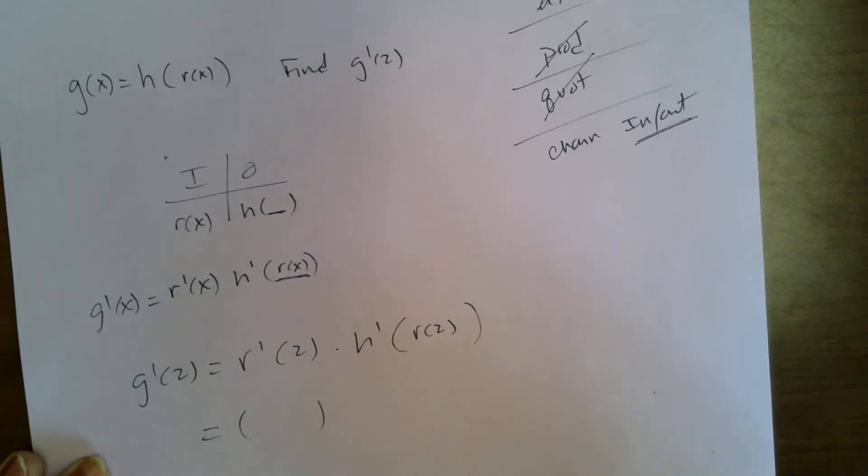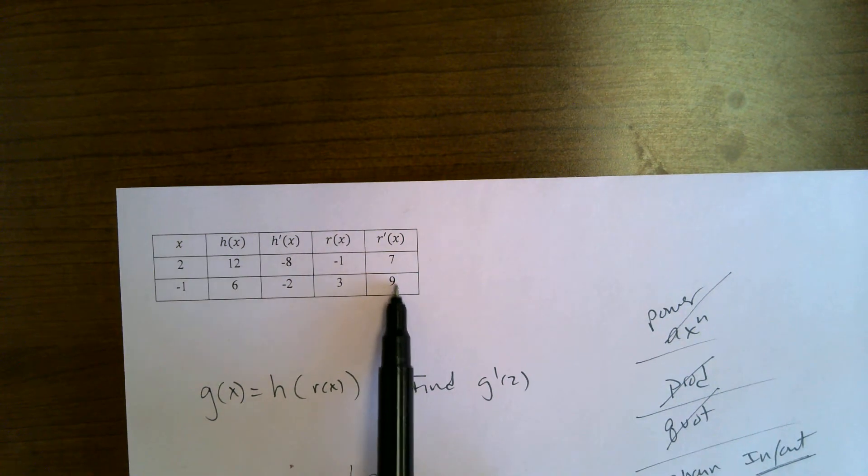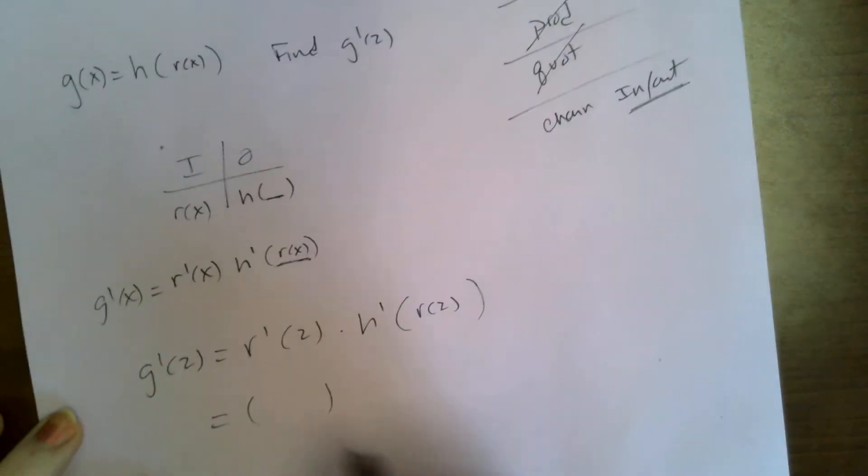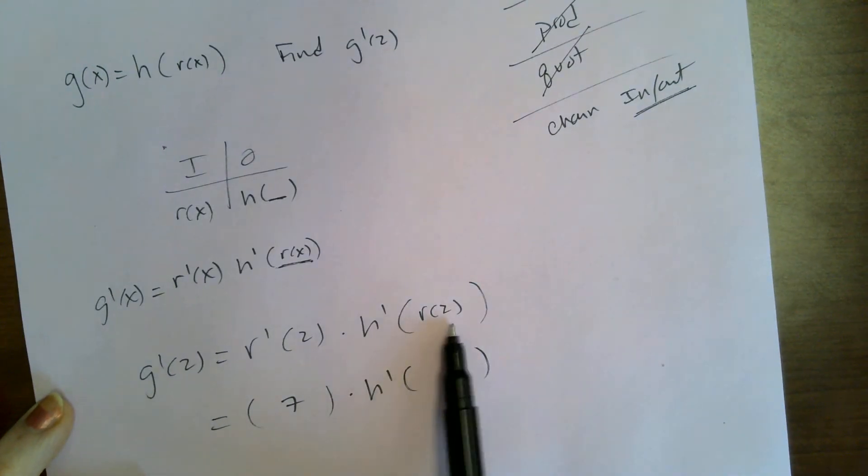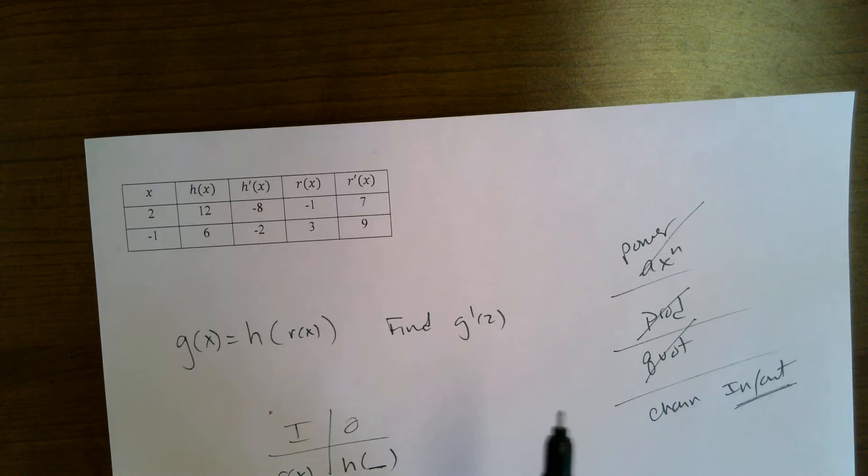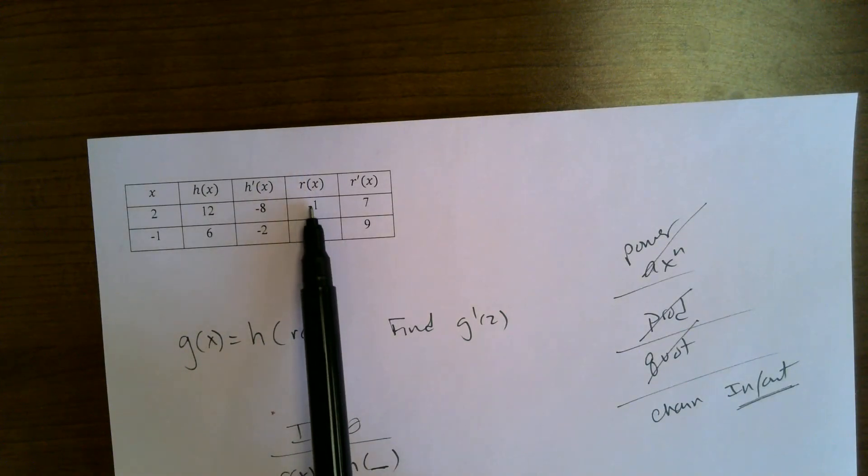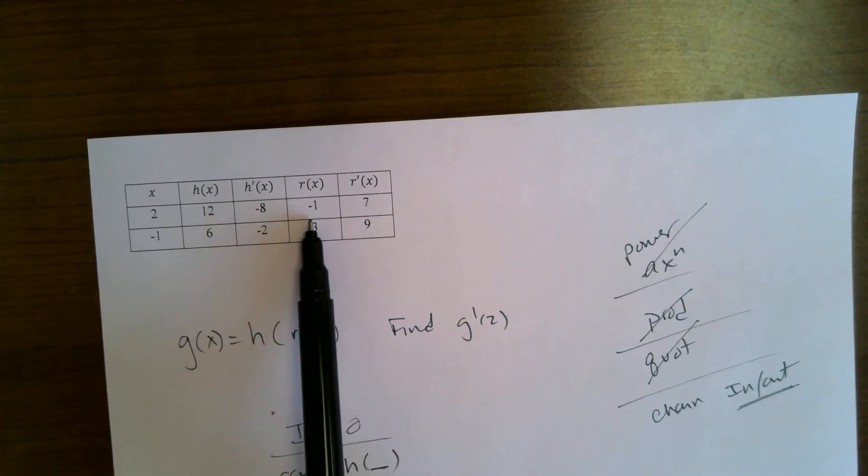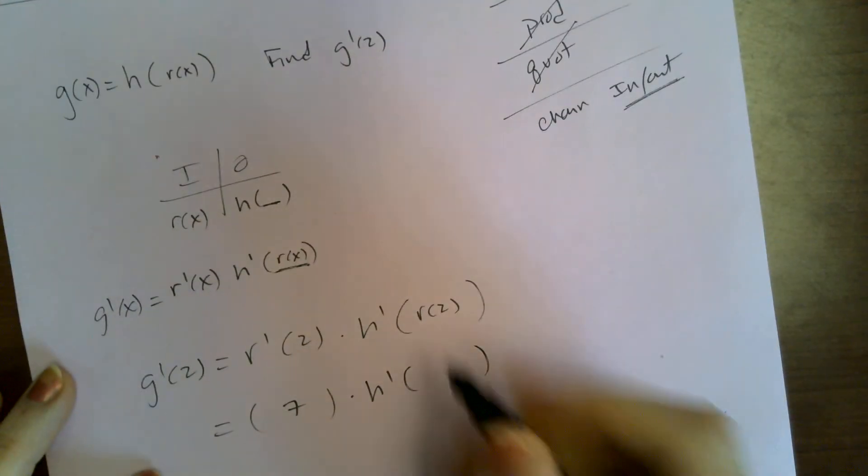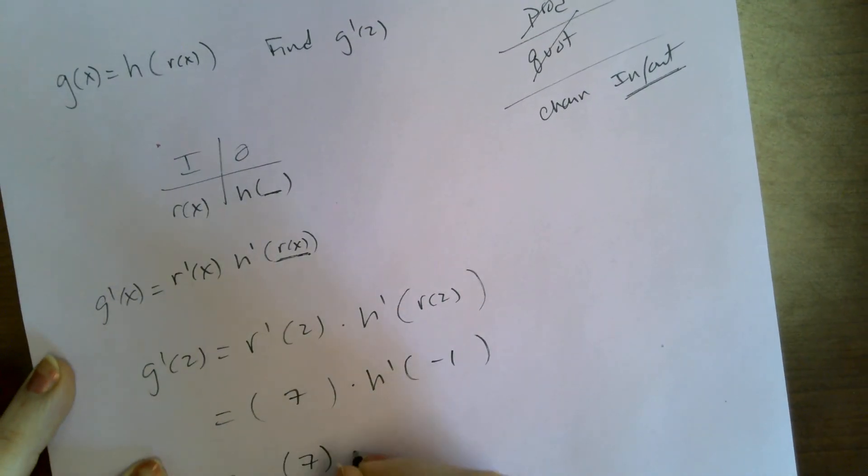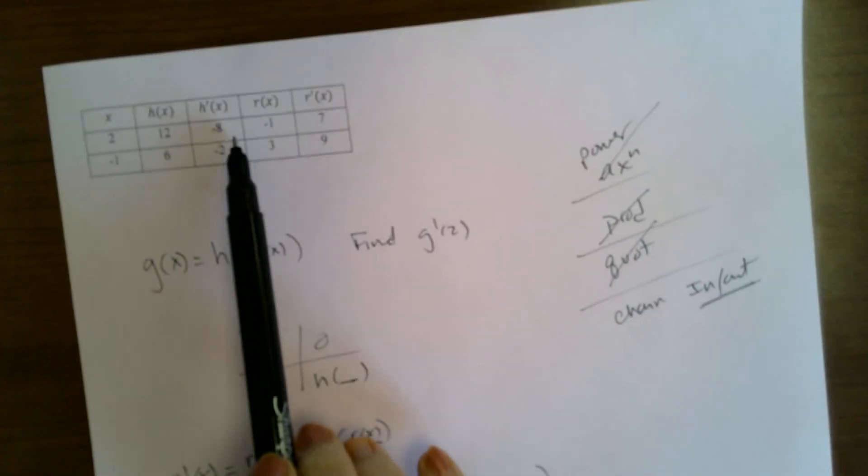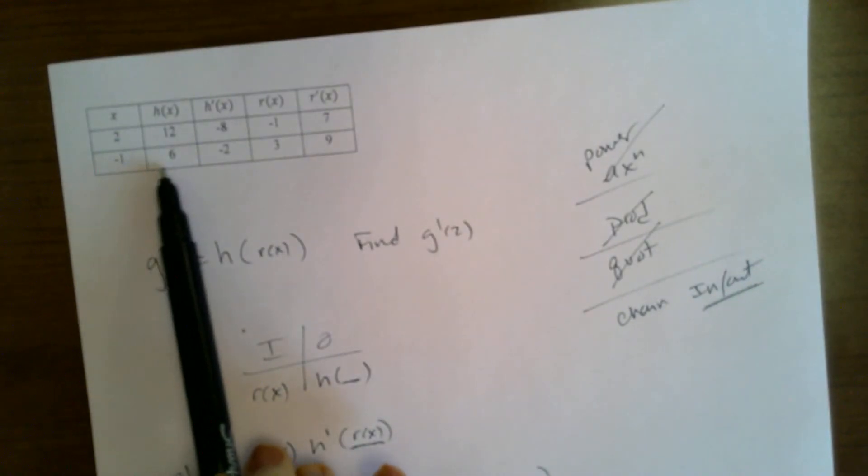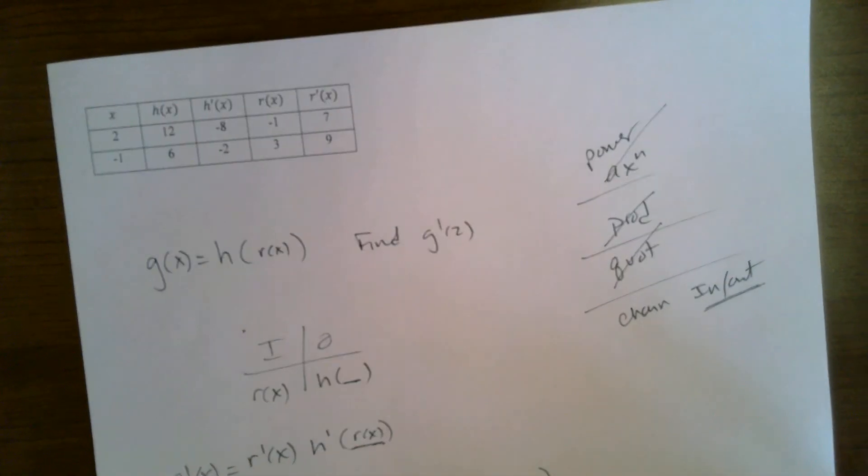r prime of two, now we're going to look at the table. So r prime of two, r prime of two is seven, times h prime of, I've got to find r of two. So r, here's the r outputs, of two is negative one, right? Okay, so seven times h prime of negative one. So I'm looking at h prime of negative one is negative two.